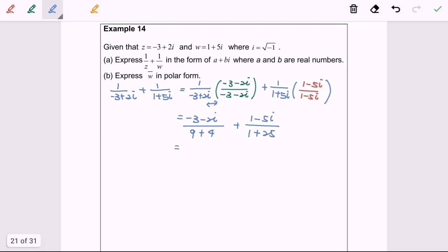Simplifying the situation, we will have negative 3 over 13 minus 2i over 13 plus 1 over 26 minus 5i over 26. Rearranging, we have negative 3 over 13 plus 1 over 26 minus 2i over 13 minus 5i over 26.